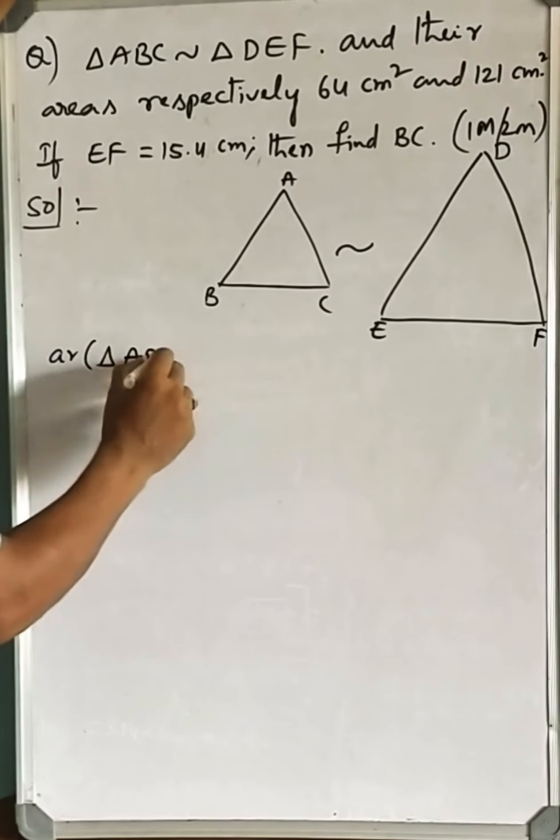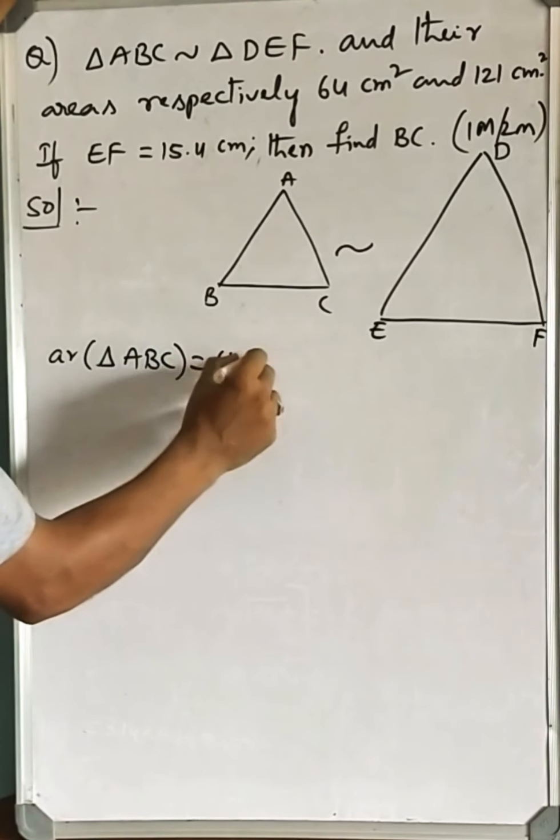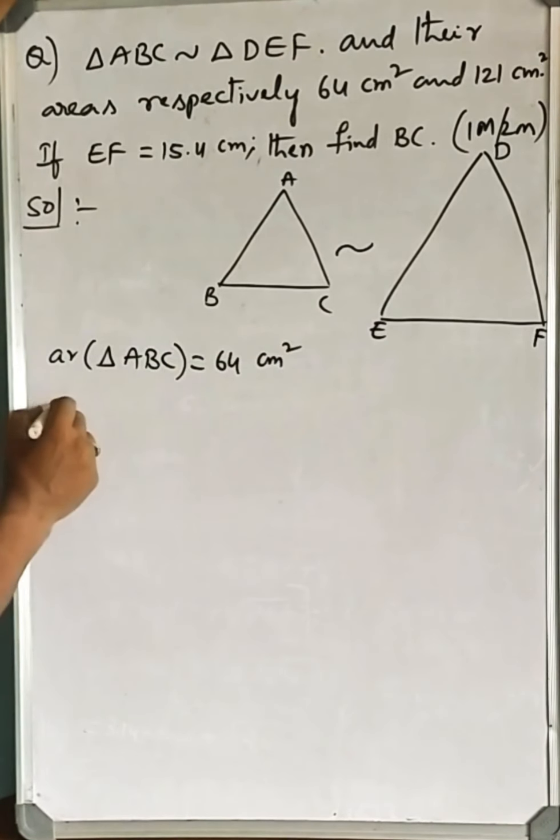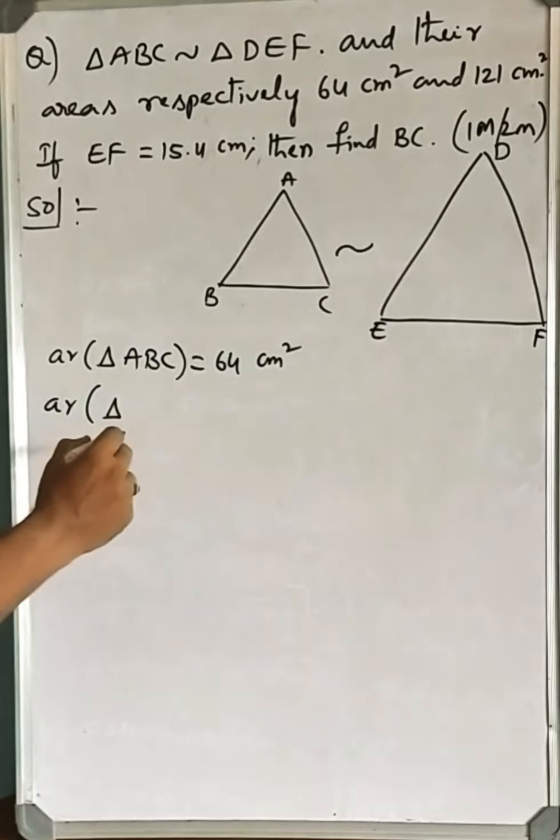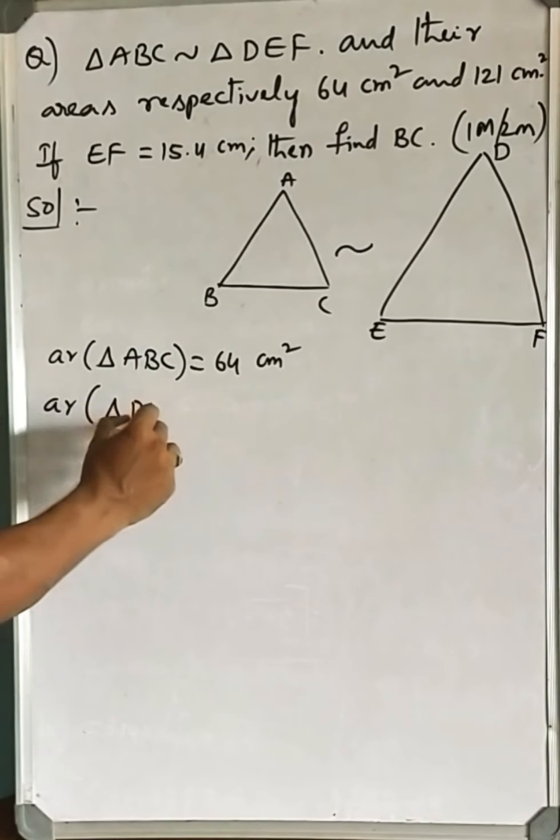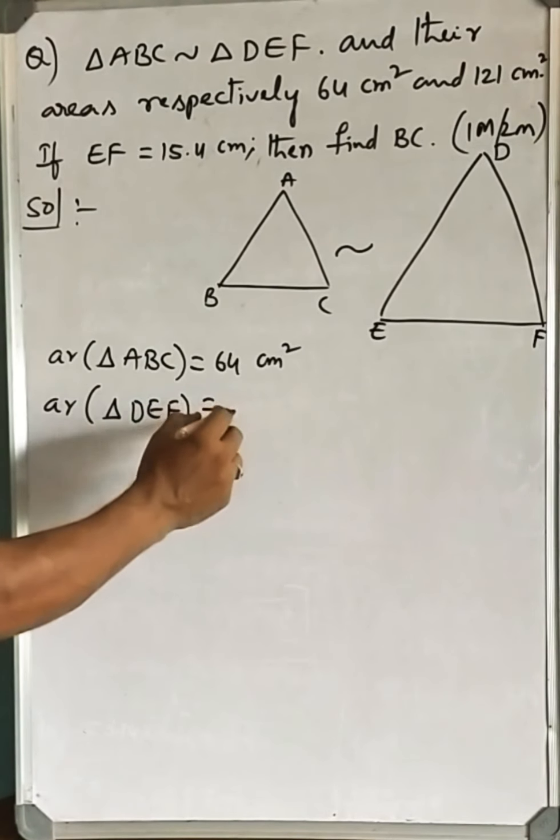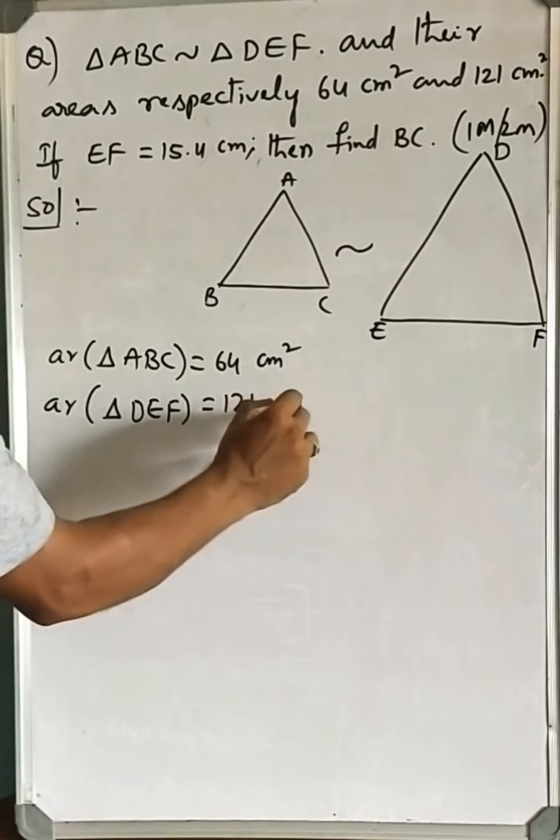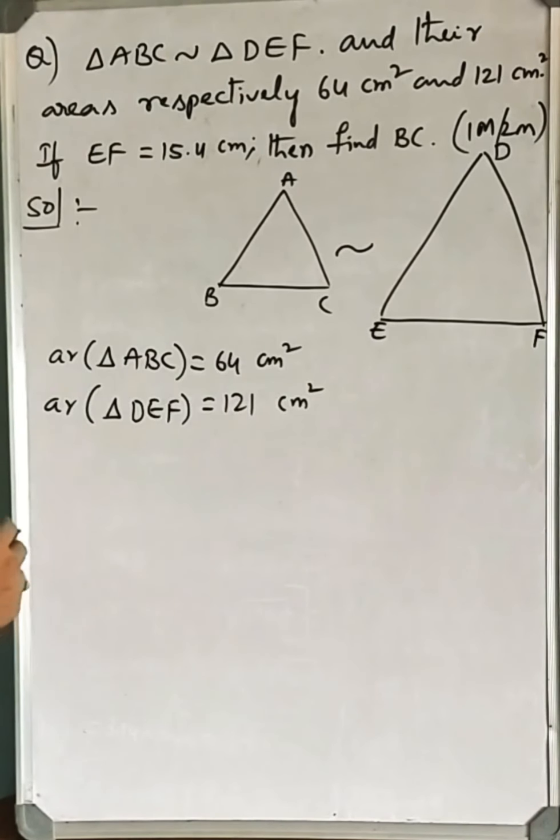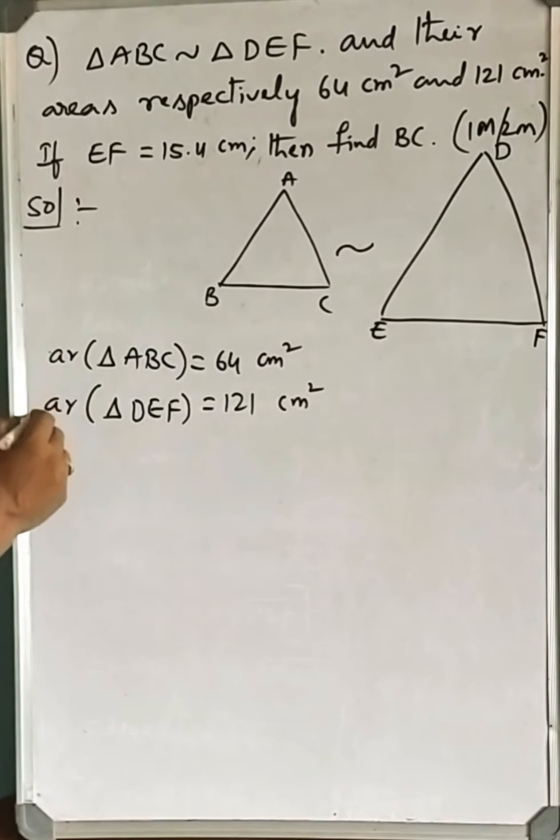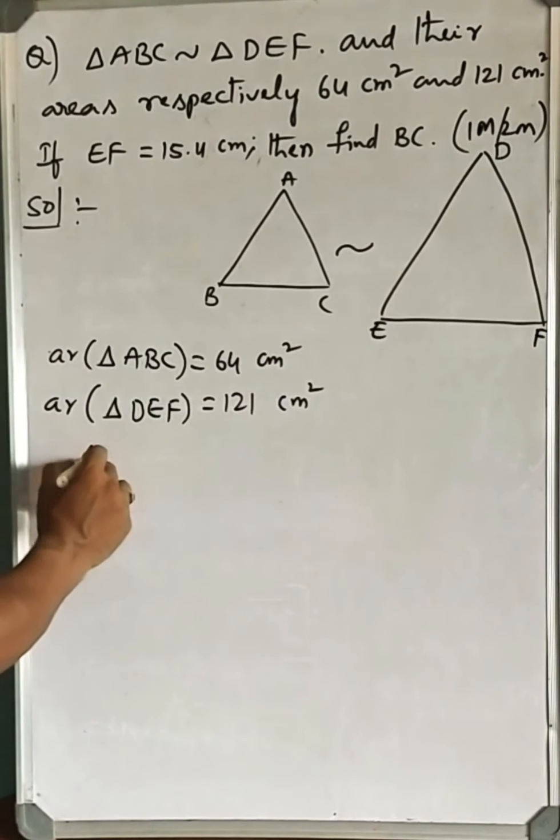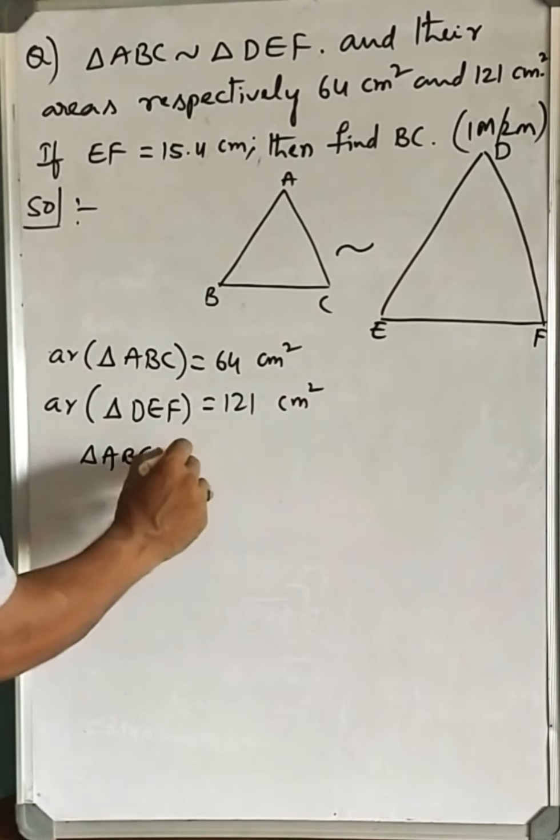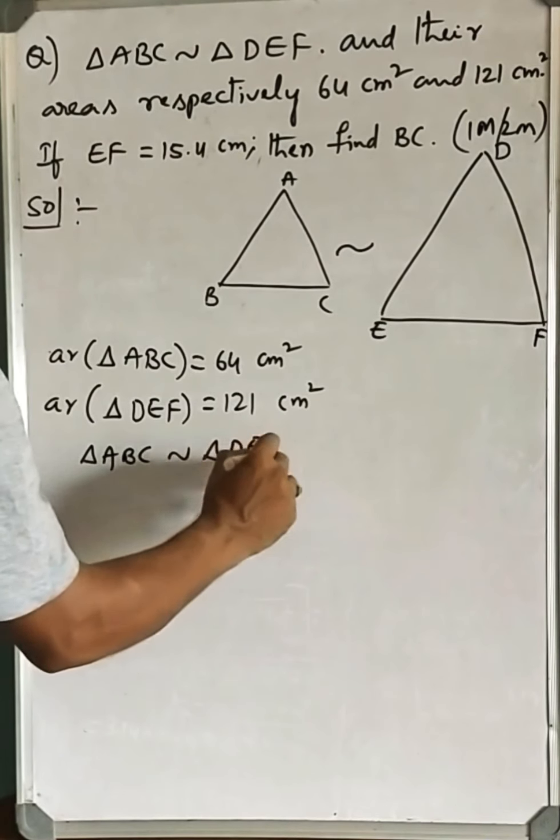Area of triangle ABC is 64 square centimeters, and area of triangle DEF is equal to 121 square centimeters. Given that triangle ABC is similar to triangle DEF.